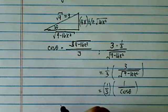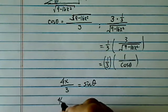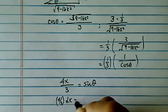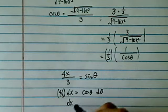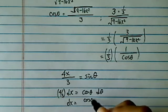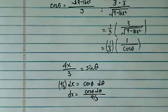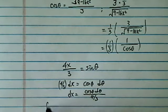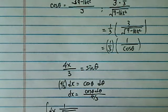Let's see what else I need. I have 4x over 3 is equal to sine theta, and then 4 over 3 of dx is equal to cosine theta d theta, which means dx is equal to cosine theta d theta divided by 4 over 3. All right, with those two pieces of information, I'm ready to do substitution for the original integral.